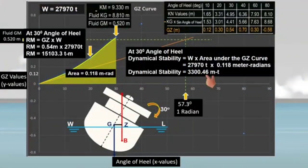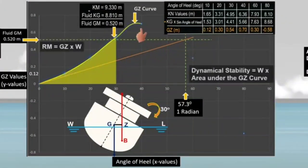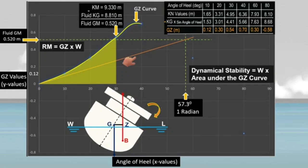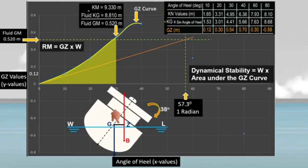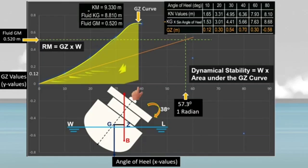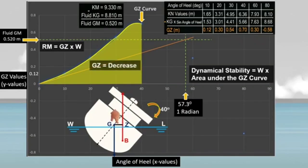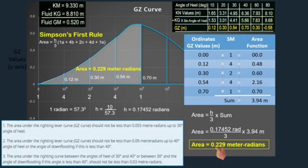Going back to our scenario, at approximately 38 degrees angle of heel, the ship's righting lever reaches its maximum and the area under the curve also increases. As the ship continues to heel at 40 degrees, her righting lever starts to decrease, but the area under the GZ curve continues to increase. The area under the GZ curve up to 40 degrees angle of heel is 0.229 meter-radians, calculated using Simpson's first rule.